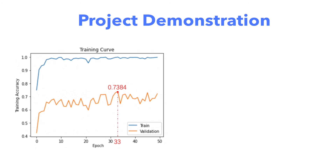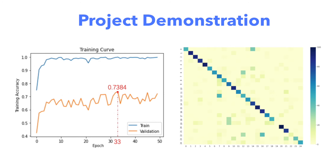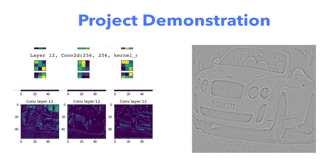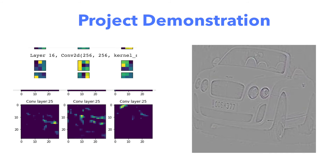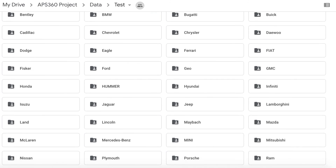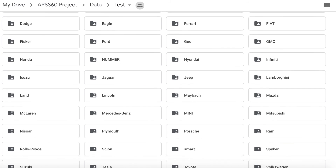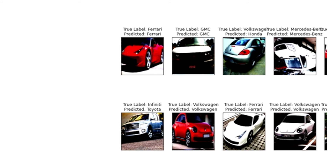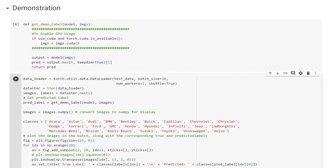After seeing the quantitative and qualitative results, let's have a quick live demo on how to use our model to predict the car make from unseen test set images. We will show the model prediction of the car make, the true label, and the car images for illustration purposes. For easy visualization, we are going to test on 20 different images, and here I'm going to run the code.